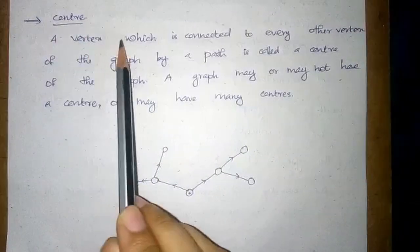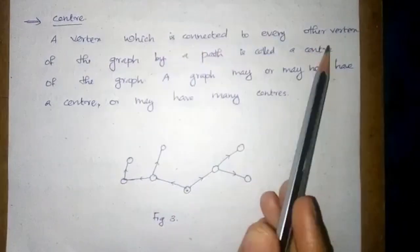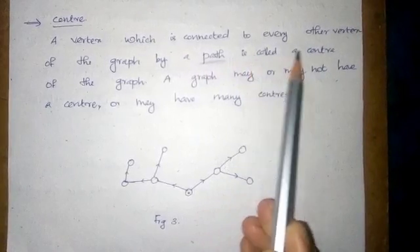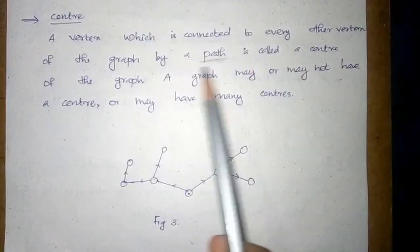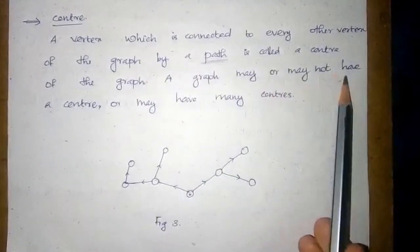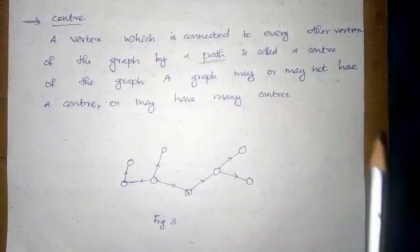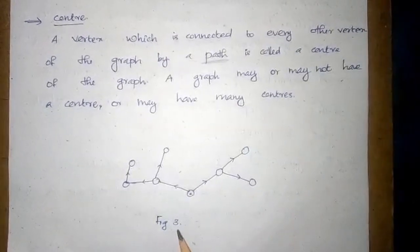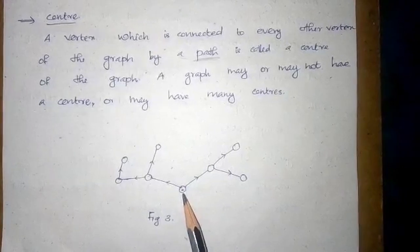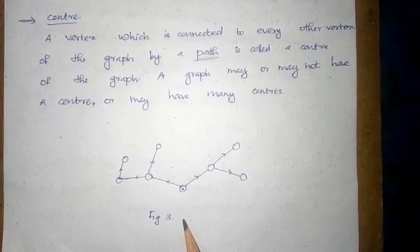Center. A vertex which is connected to every other vertex of the graph by a path is called a center of the graph. A graph may or may not have a center, or may have many centers. Consider figure 3 — here this vertex is considered as a center of the graph. Thank you.